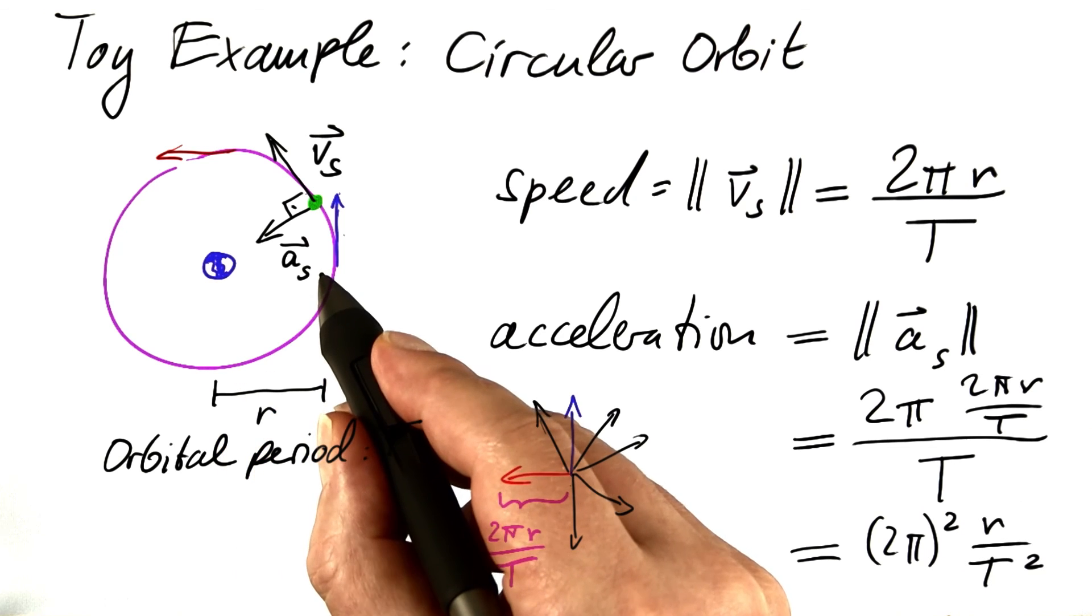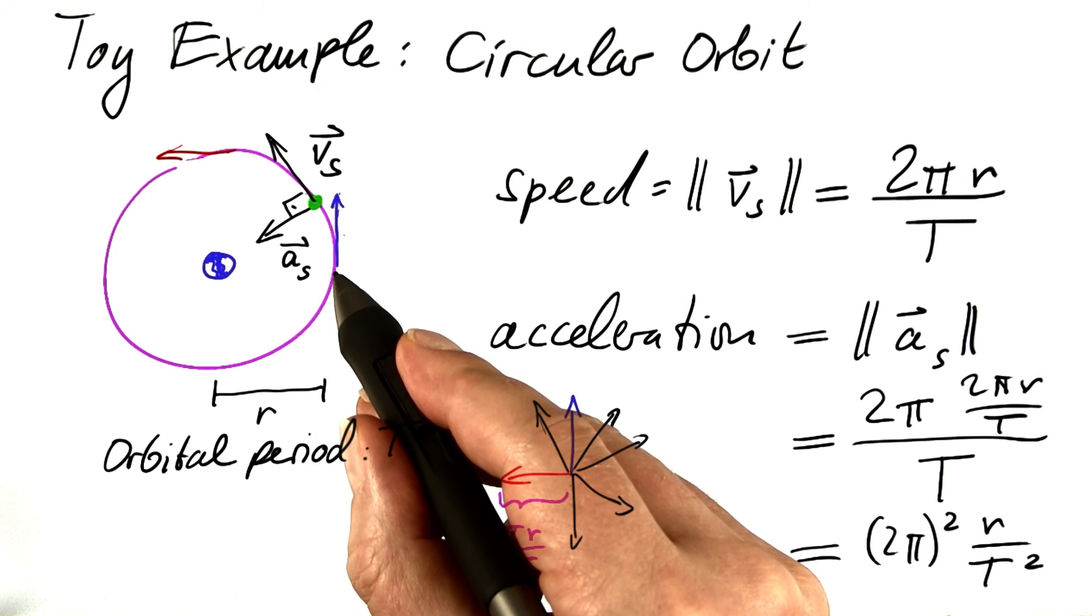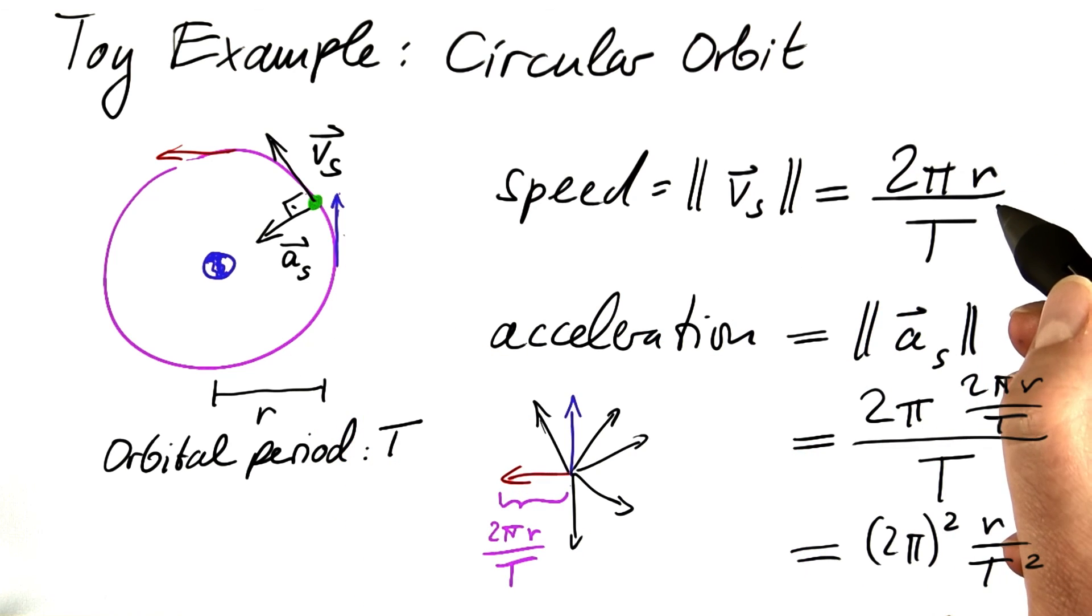So given the radius and the orbital period of that circular motion, we can determine what the speed is and what the acceleration is.